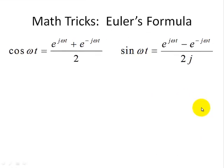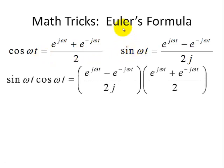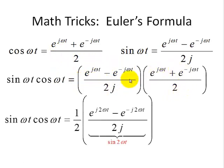We'll do one more trigonometric identity using these relationships for cosine and sine. And just to show you that this Euler's formula stuff does really work. So, sine omega t times cosine omega t. We'll substitute the definitions in terms of complex exponentials here for the cosine and here for the sine.